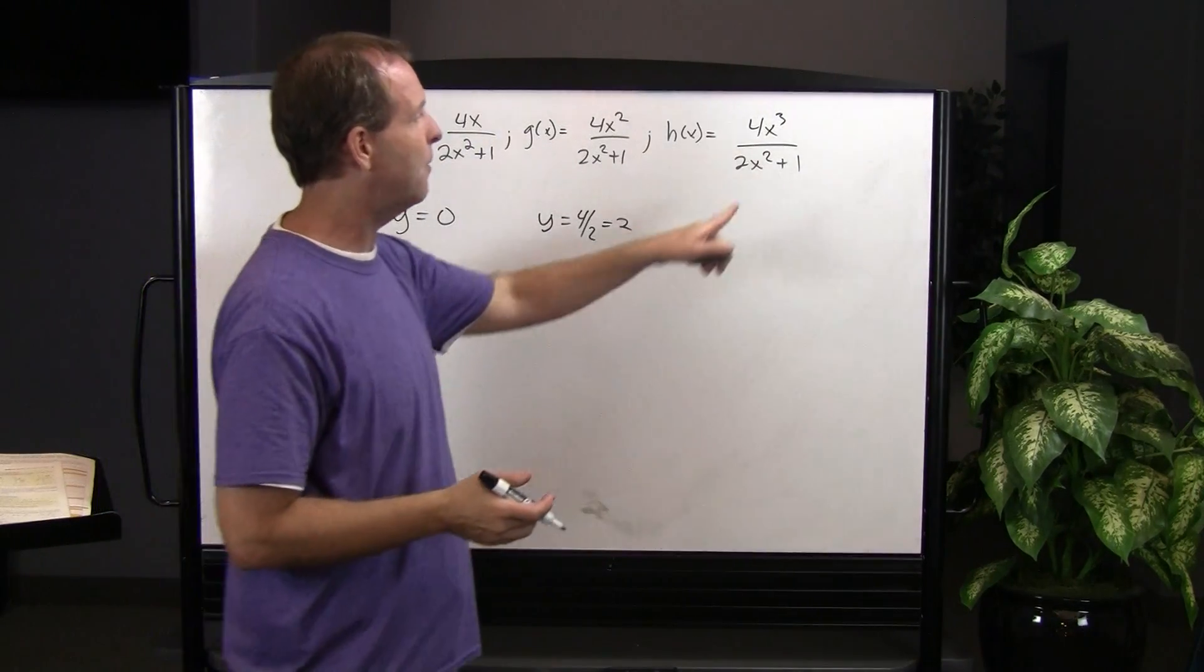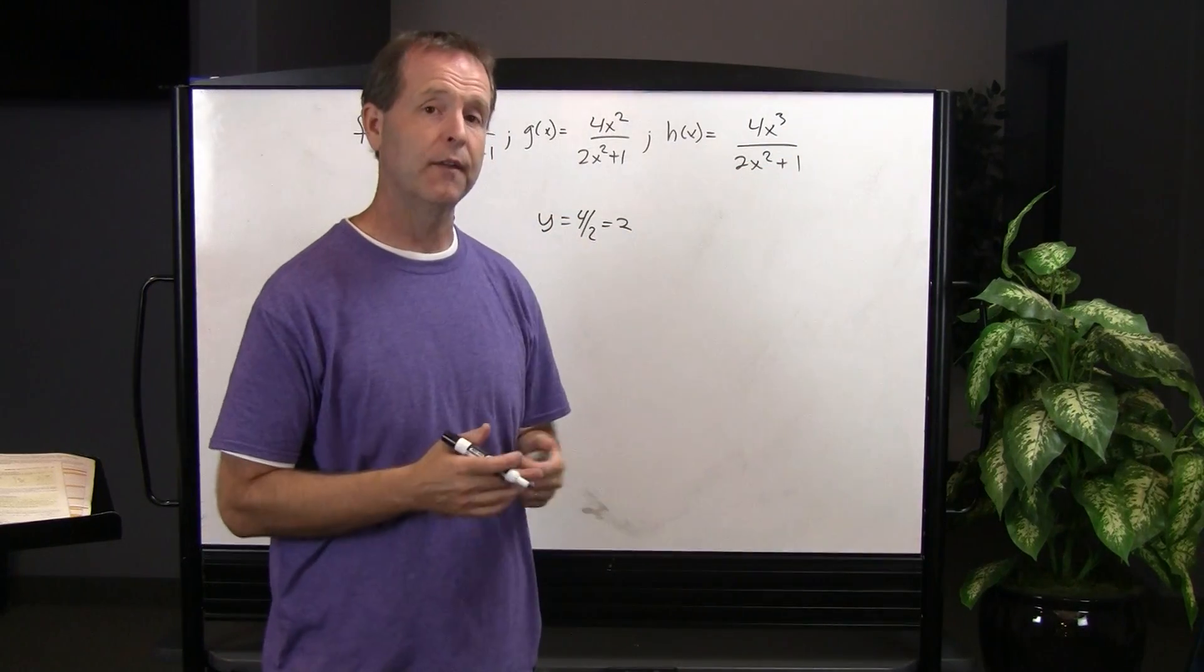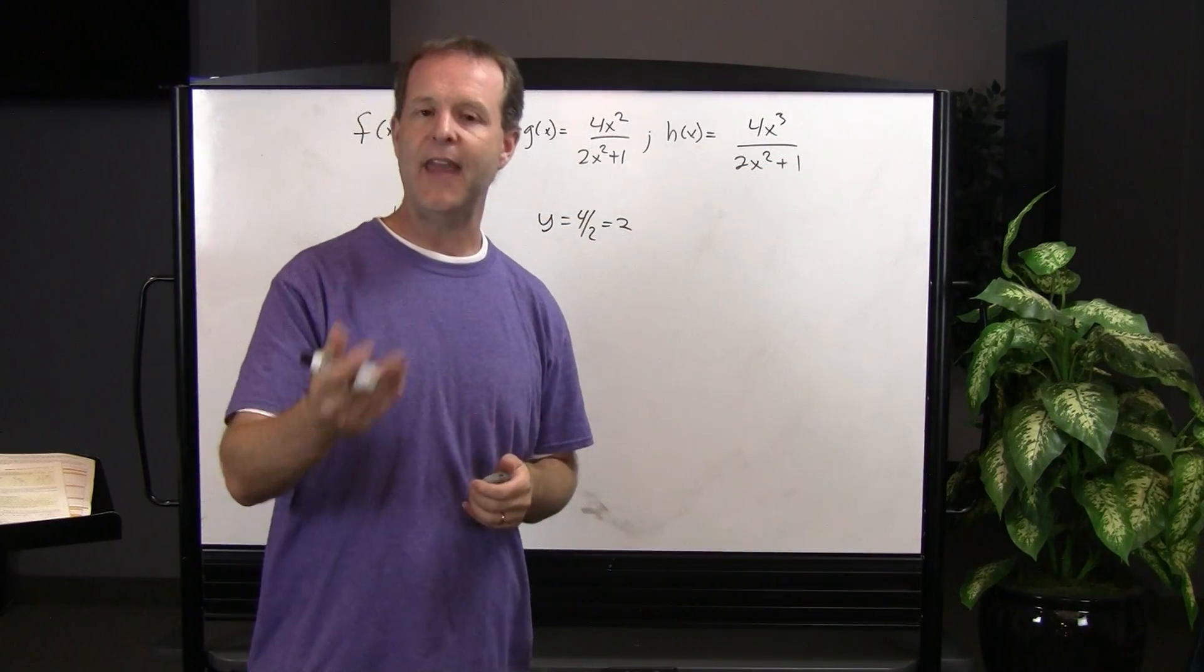In our third example, the degree of the numerator is greater than the degree of the denominator. In that case, it does not have a horizontal asymptote.